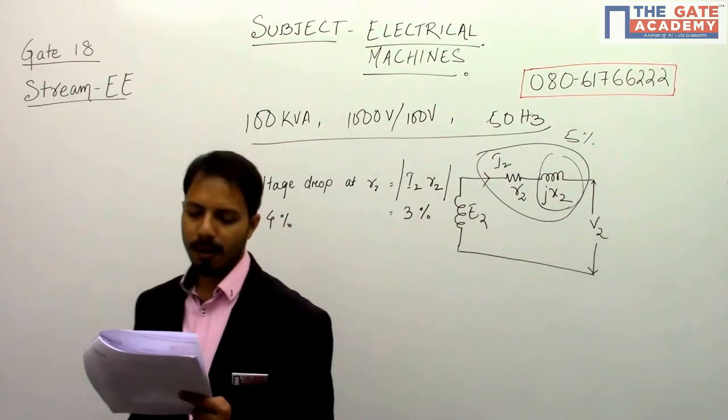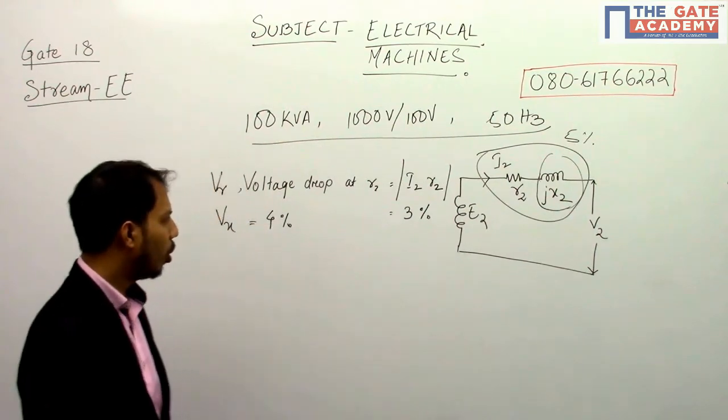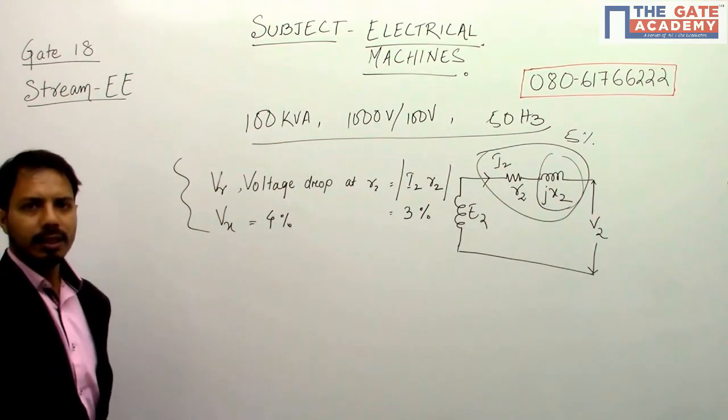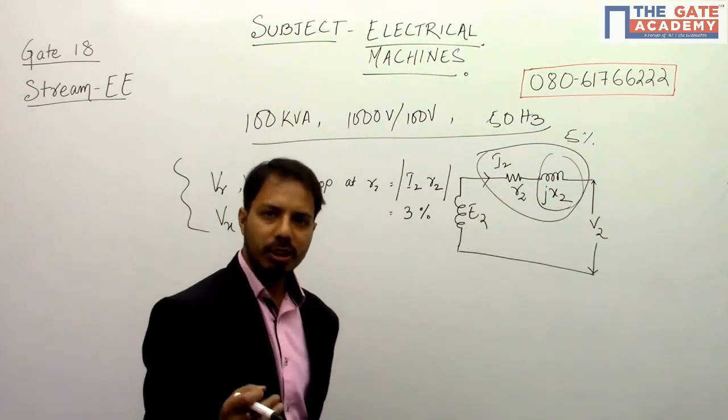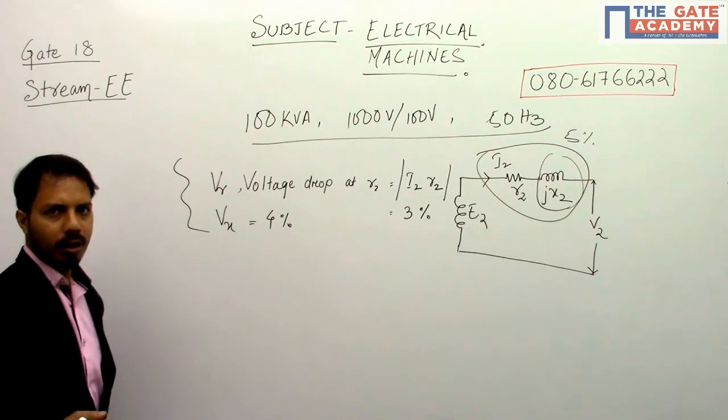Now they are asking the percentage regulation of the transformer at full load with 0.8 lagging power factor. So this is condition 1. Now they are saying that at full load, if the power factor is 0.8, what will be the voltage regulation? It is also given that it is lagging power factor.